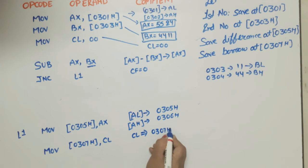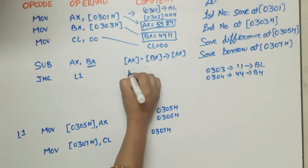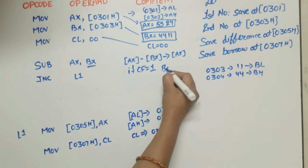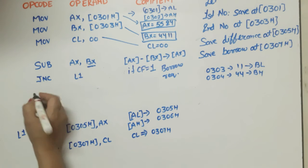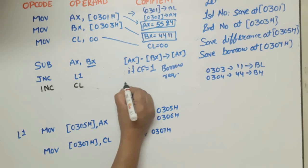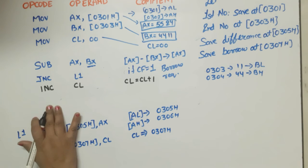Now the case: if this condition is not true, means that if CF is equal to 1, means that if borrow is required, in that case what will happen? We have to increment CL value. So we will write INC CL. Now what is the new value of CL? CL is equal to CL plus 1.